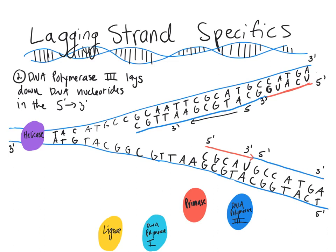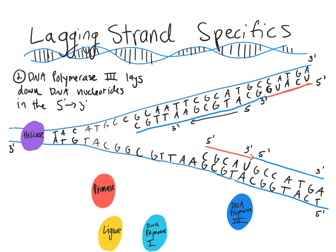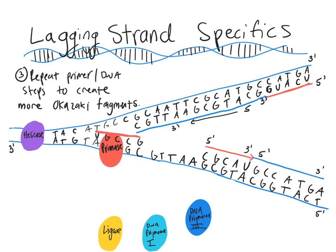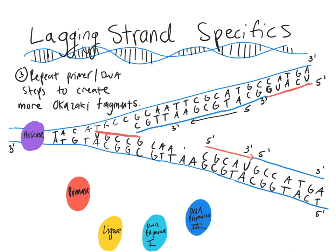Instead of one long continuous strand like the leading strand, because we're going in the opposite direction on the lagging strand we have to keep making these tiny Okazaki fragments. The next step is to repeat this process: primase lays another short primer farther along, and then DNA polymerase III fills in more DNA nucleotides in the five to three direction until it bumps into the previously established fragment.